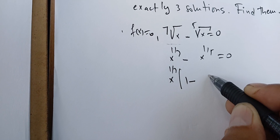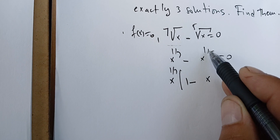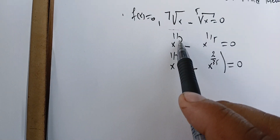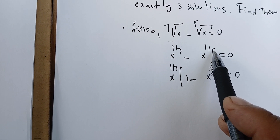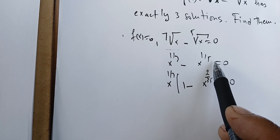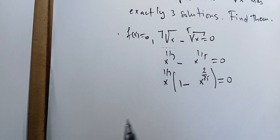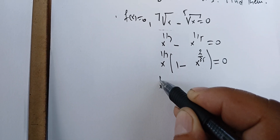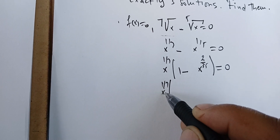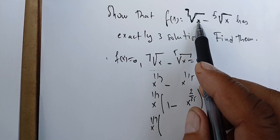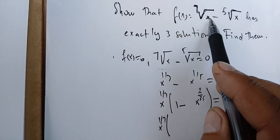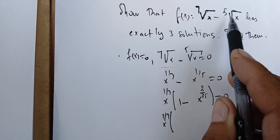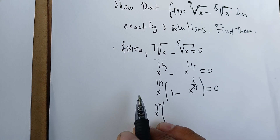Factoring gives us one minus x to the power of (one-fifth minus one-seventh), which is two over 35. Let me verify: one-fifth minus one-seventh equals two over 35 — that's right. Now to get the solutions: we can see that zero is a solution, because plugging in zero gives f(0) = 0. We can also see that one is a solution, because plugging in one gives zero as well.